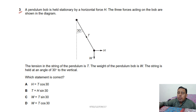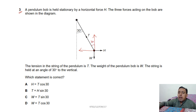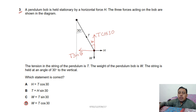Tension T is divided into components. The angle is 30°, so the horizontal component is T·sin(30°) and the vertical component is T·cos(30°). Since the pendulum is in equilibrium: H = T·sin(30°) and W = T·cos(30°). Therefore W = T·cos(30°), and option D is the correct one — no other option matches.